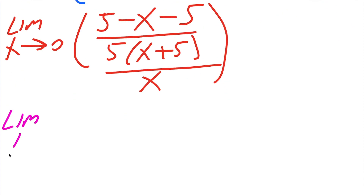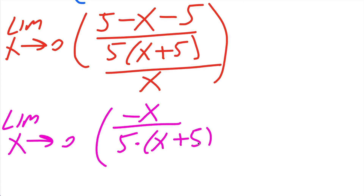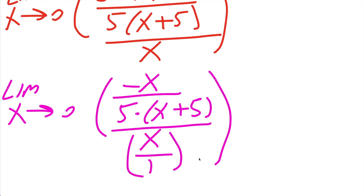Now we simplify and cancel some terms. We have five minus five, so that cancels, and we get negative x divided by five times x plus five. The whole thing is divided by x, which we can write as x divided by one.